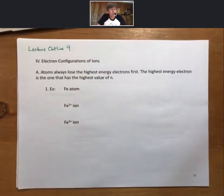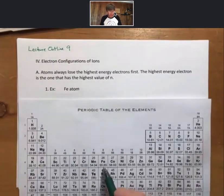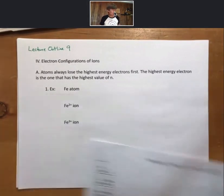We're back to talking about the electron configurations of ions. Remember, atoms always lose the highest energy electrons first. These are always with the highest value of n. If we look at the electron configurations of iron atoms and ions, and we refer to our periodic table, iron is right here, 26 electrons.